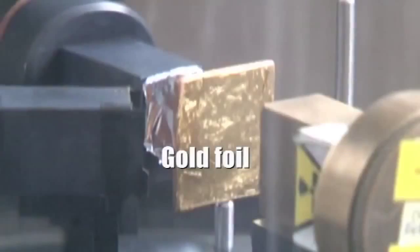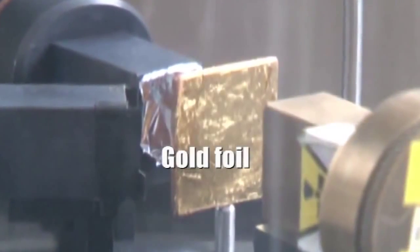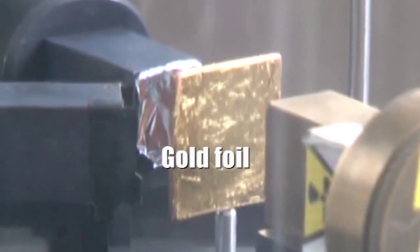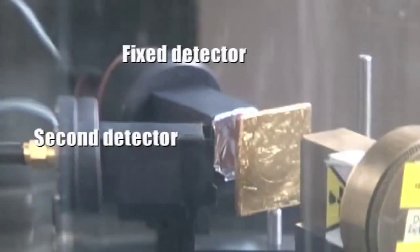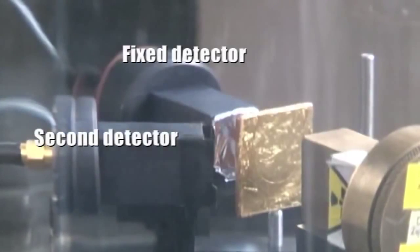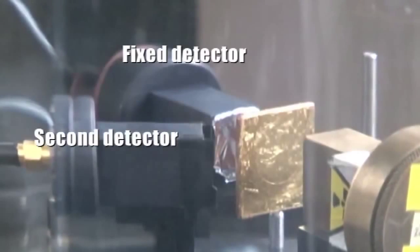They pass through a gold foil, which is about 1.5 microns in thickness, and they are then detected by one of the two detectors set up behind the foil.